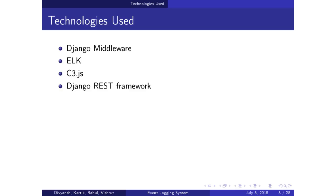The technologies we have used are: Django middleware, ELK — which stands for Elasticsearch, Logstash, and Kibana — C3JS, and the Django REST framework.